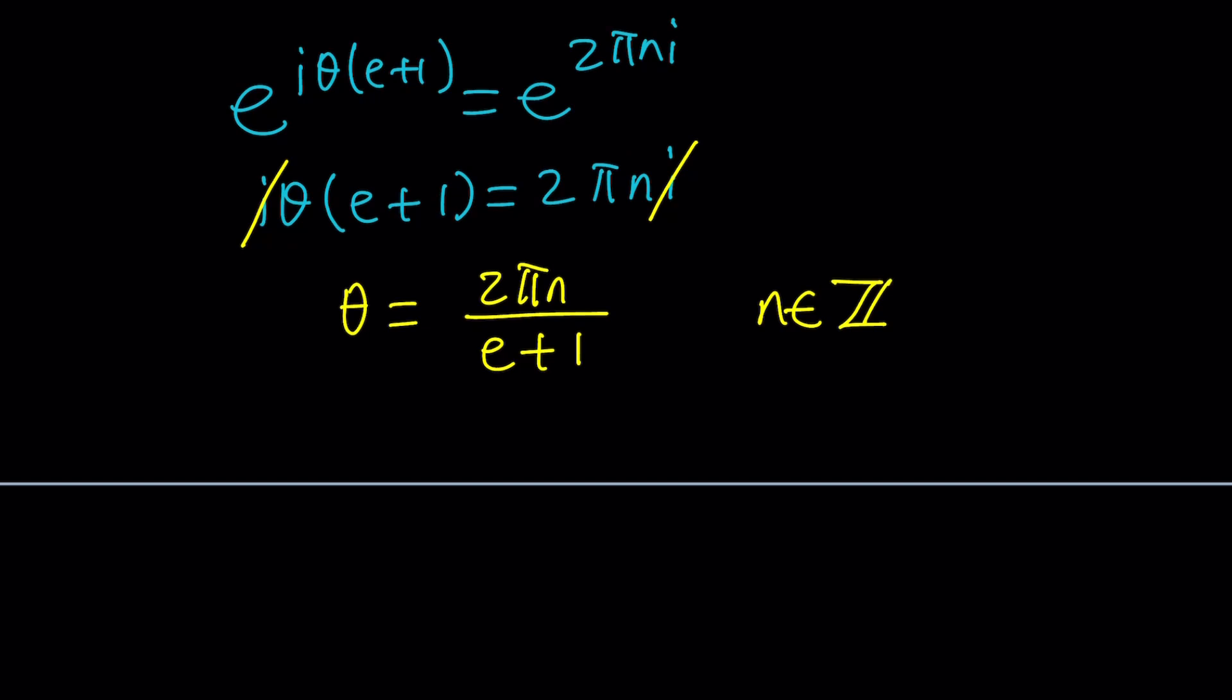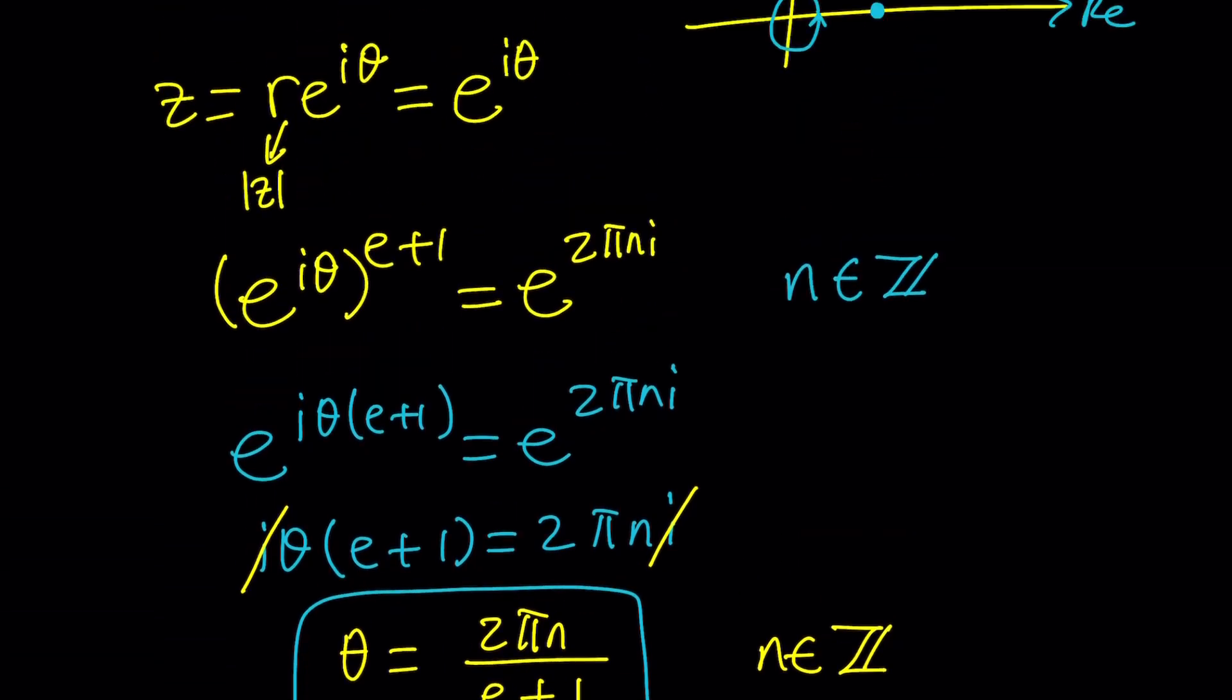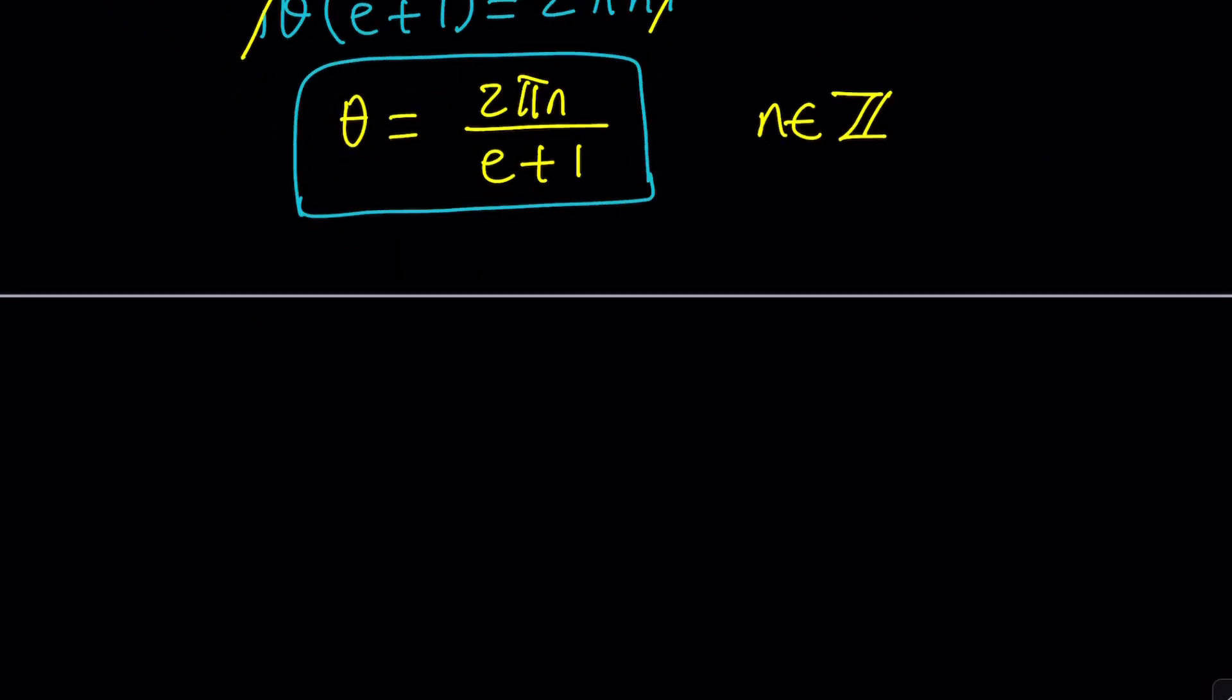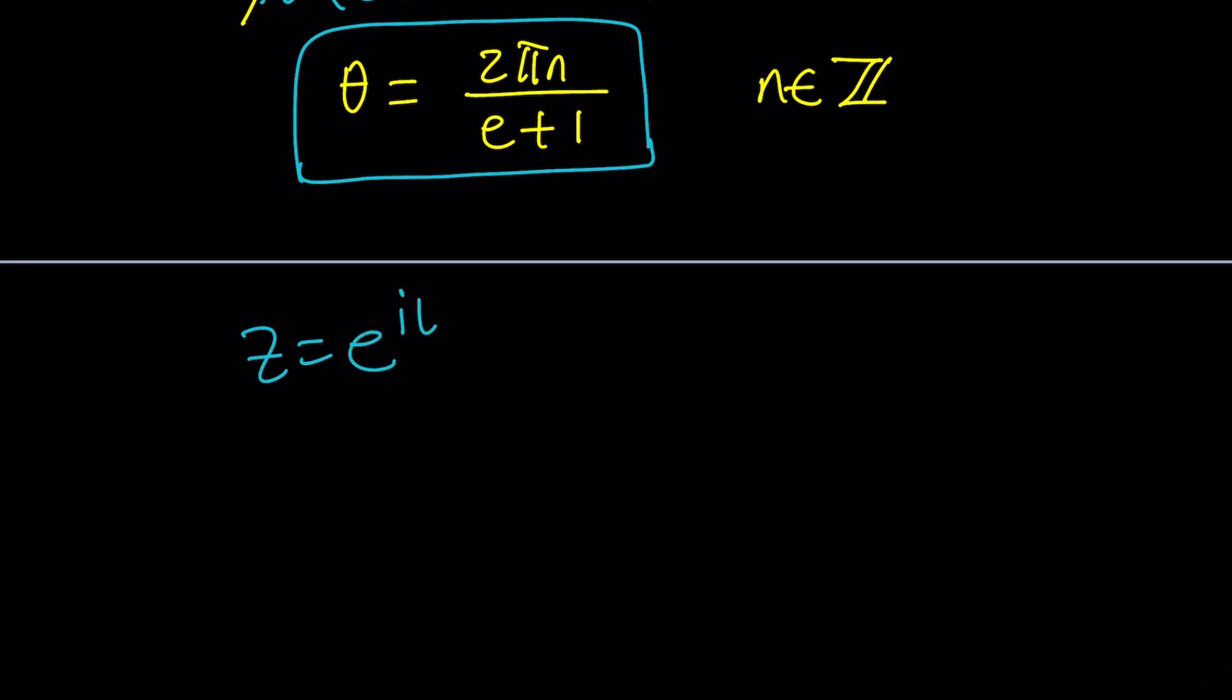So we found theta but we need to find Z. We just assume that Z can be written as e to the I theta, especially because R is equal to 1. So now Z can be written as e to the power 2 pi n I divided by e plus 1. For different values of n, because n is an integer, this is going to take different values, so infinitely many solutions in other words.